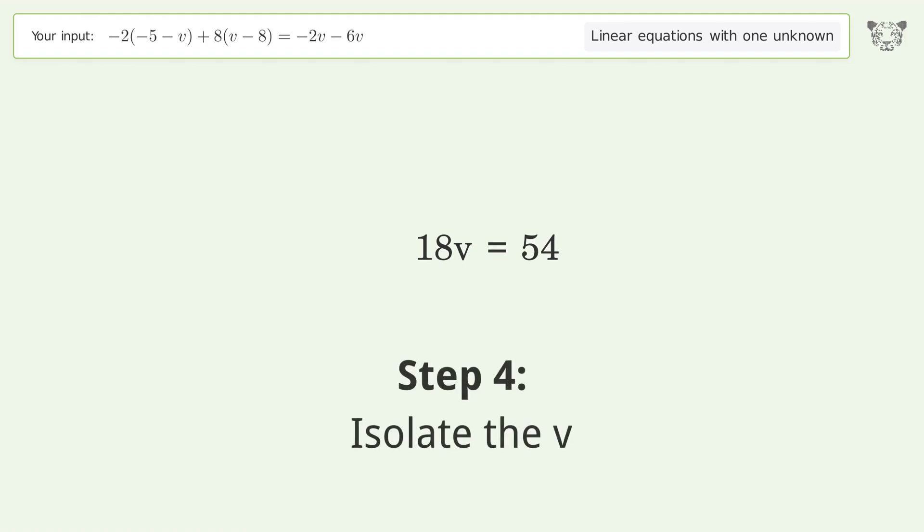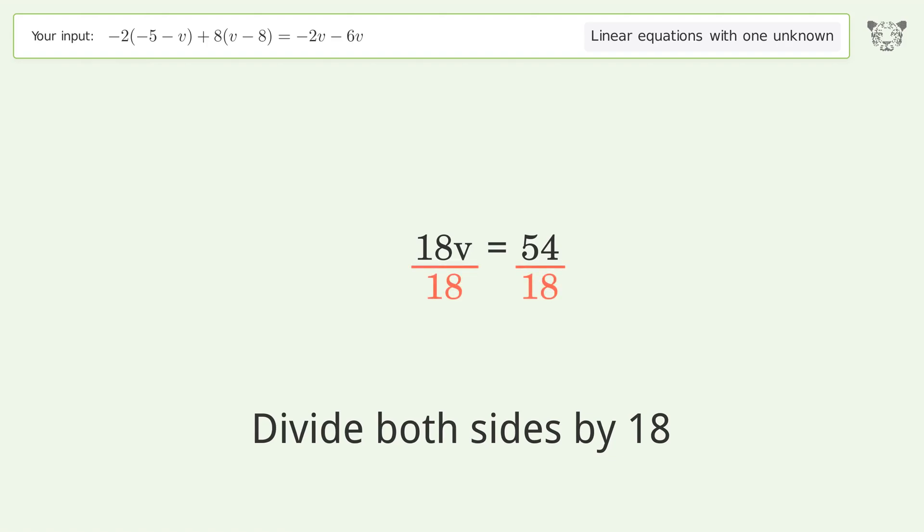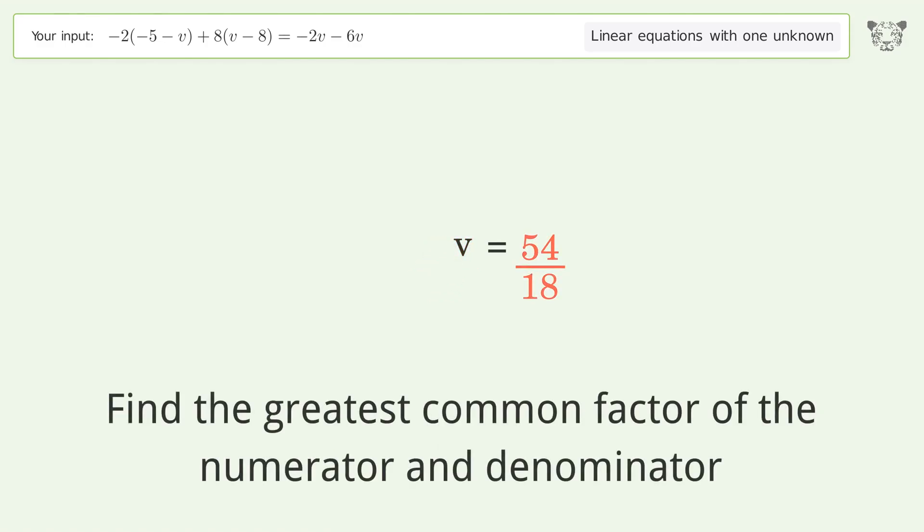Isolate the v. Divide both sides by 18. Simplify the fraction. Find the greatest common factor of the numerator and denominator.